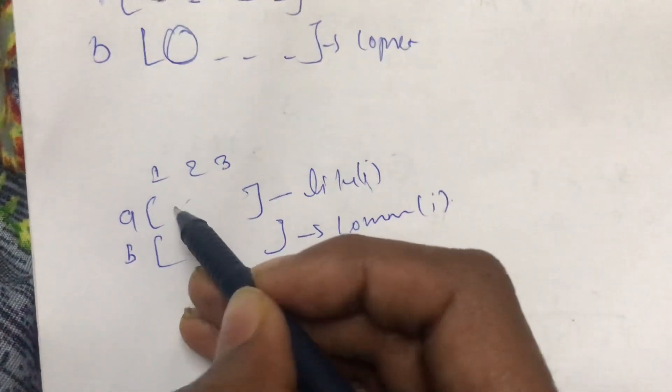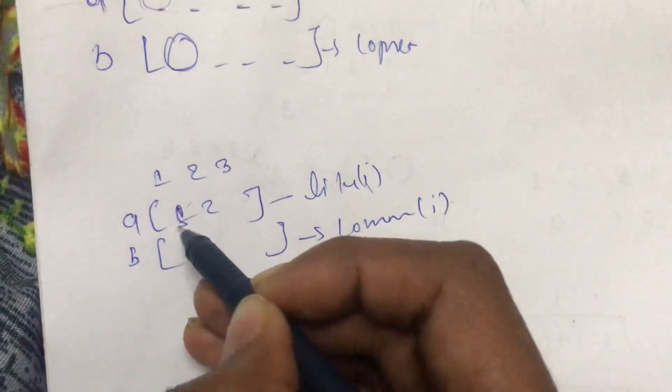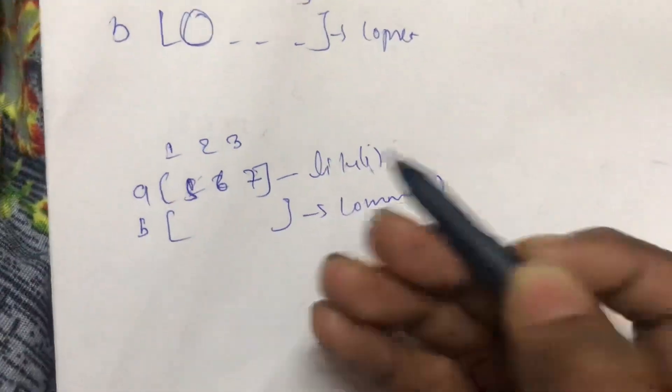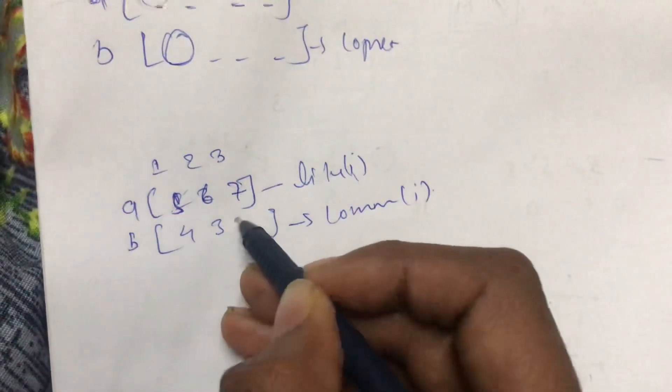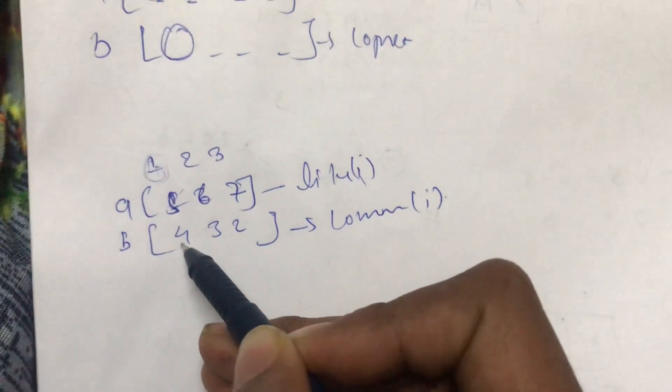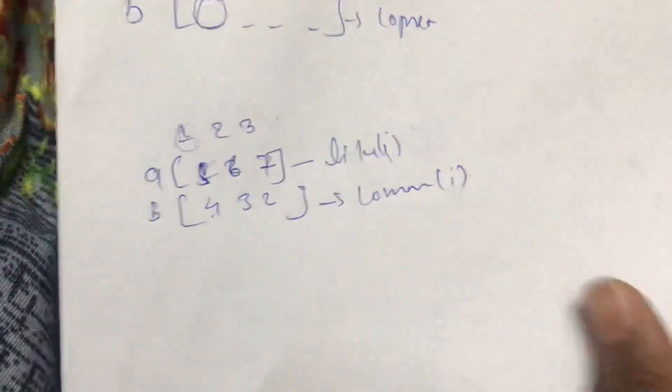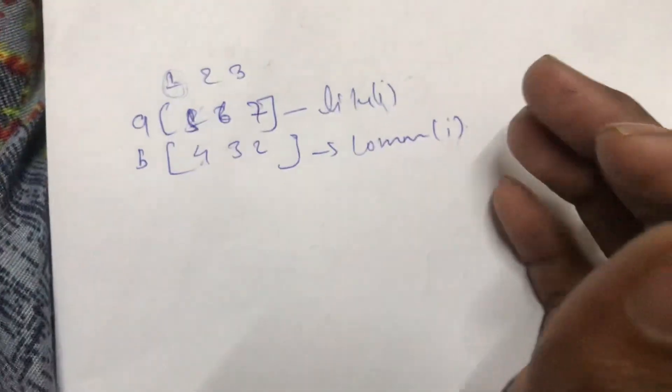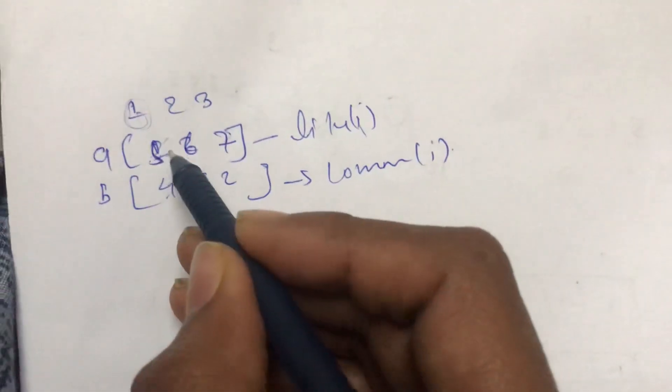Let's say we have like five, six, and seven for likes, and we have four, three, and two for comments. So in the first post it has like five likes and four comments. This is basically what the question is saying. The question is asking you to output the most viral post, so you need to output the index of the post which is the most popular.